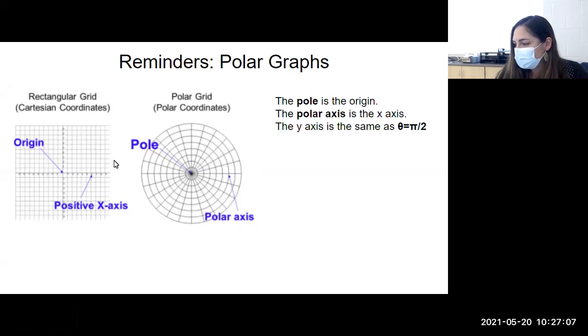And we call the origin the pole. The pole is just the point (0,0). This is not on this diagram, but the y-axis is the same as theta equals pi over 2. Let me leave that up for a bit. Tell me if you have any questions about it. Are you okay with that?